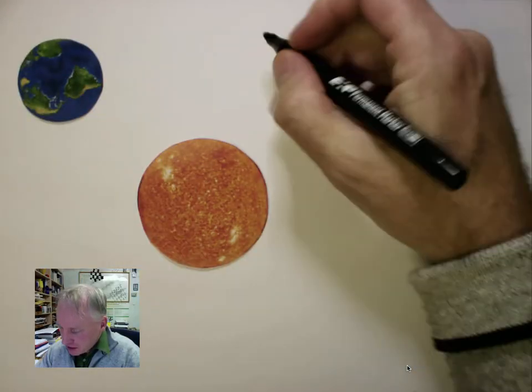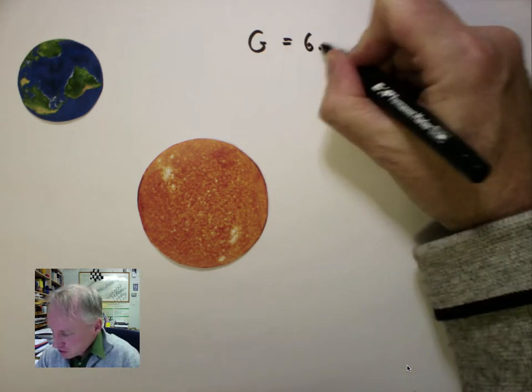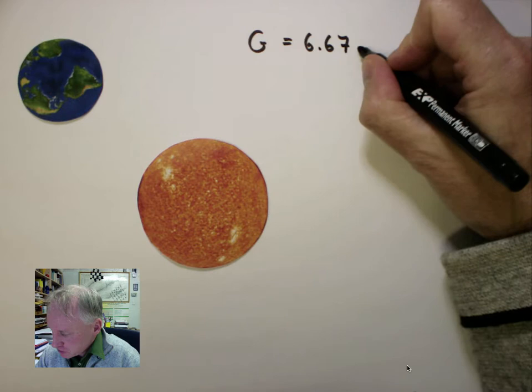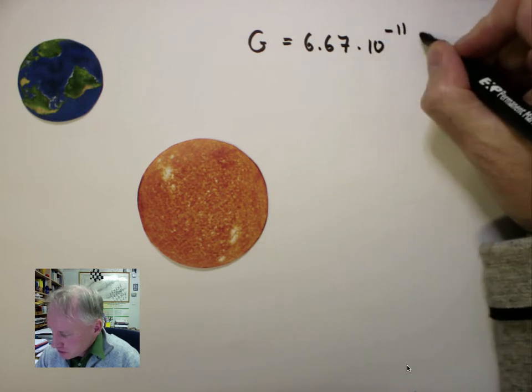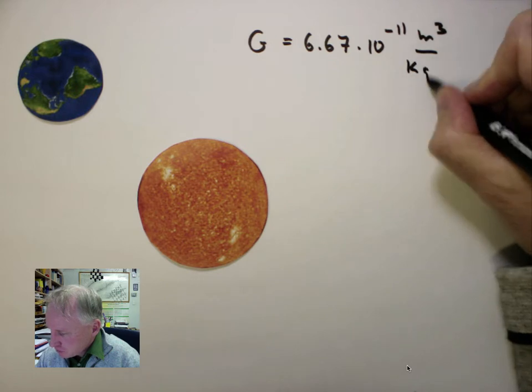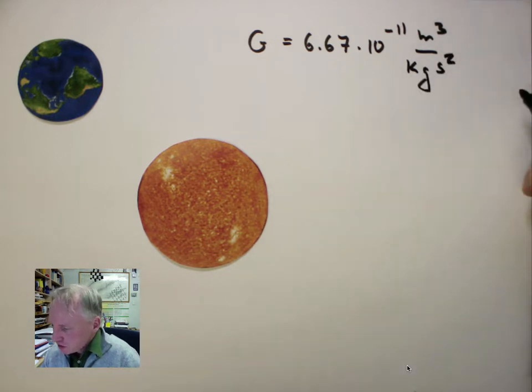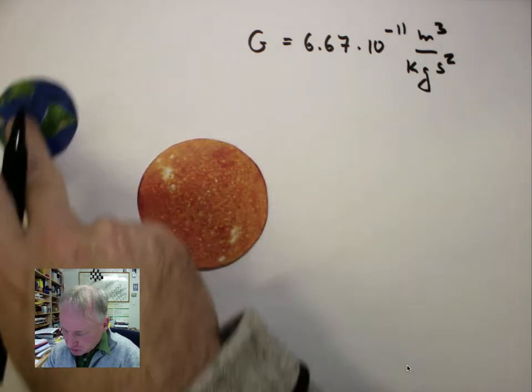Since Cavendish, we know what G is. G is 6.67 times 10 to the minus 11 meters cubed divided by kilogram divided by second squared. With this constant, it is possible to determine the mass of the Sun.